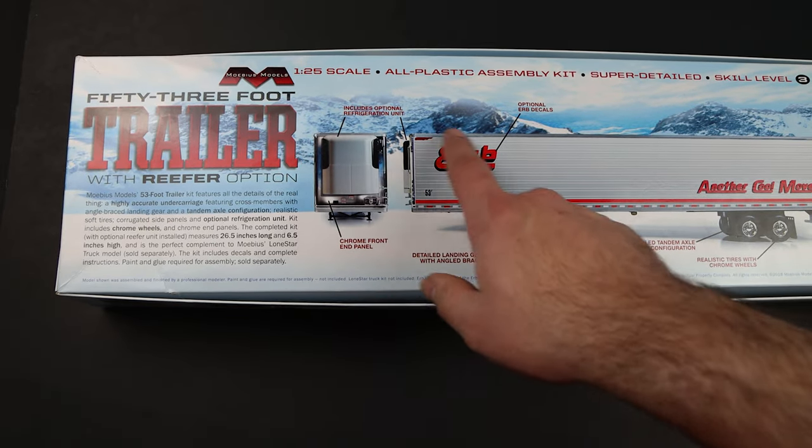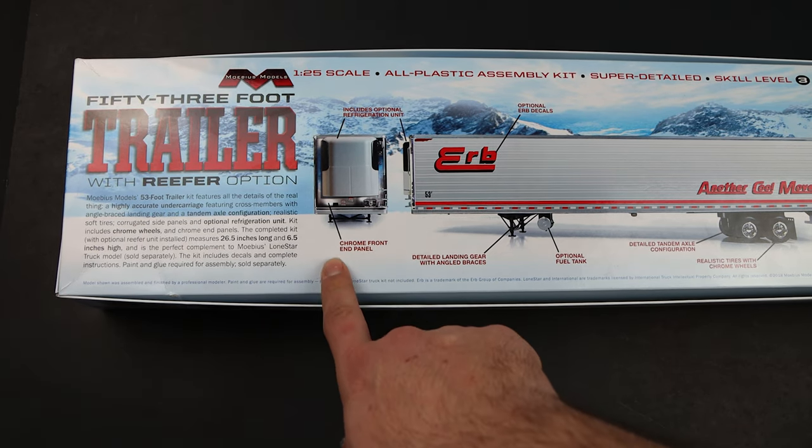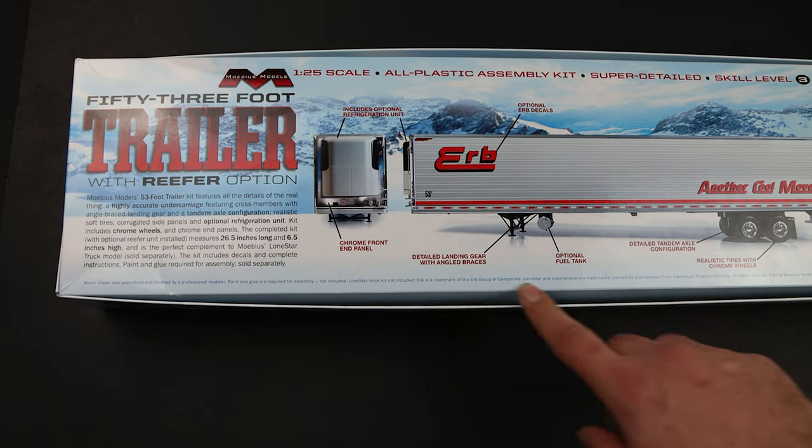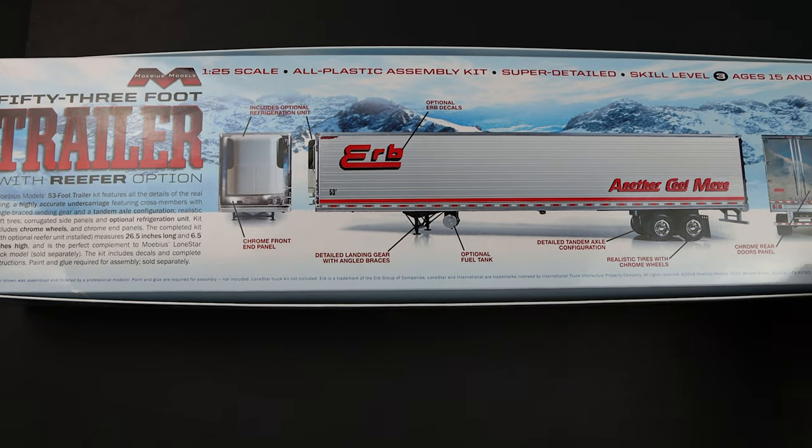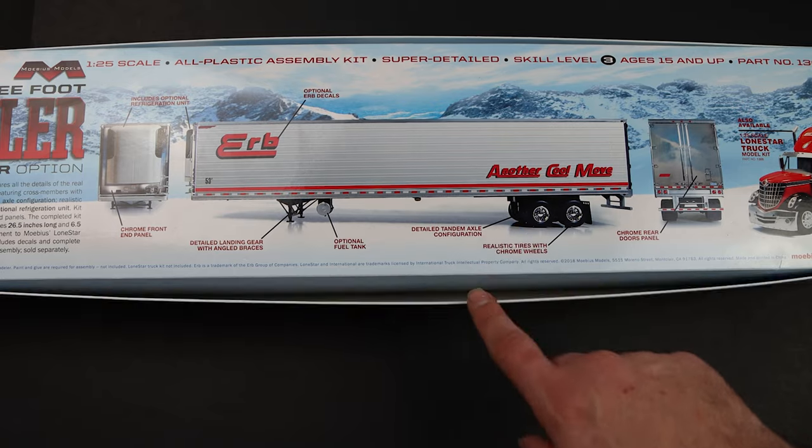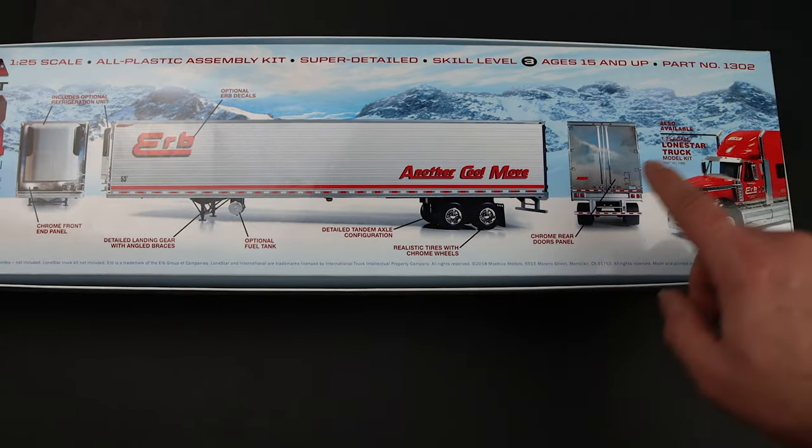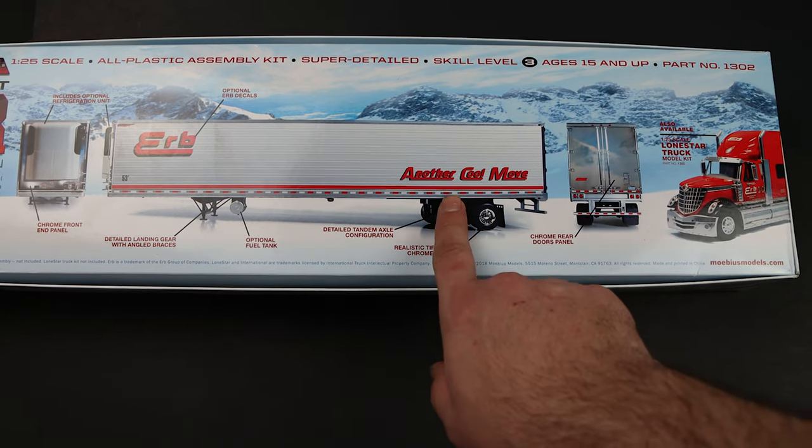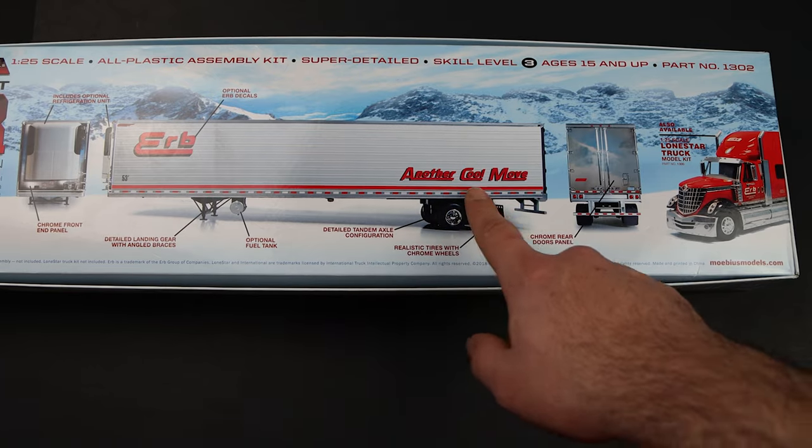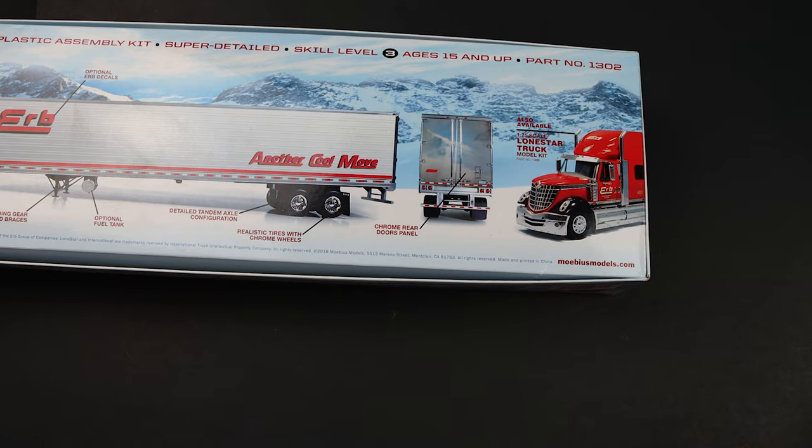You can see here they talk about some of the optional things and whatnot about it. The refrigeration unit on the front, chrome end plates, the landing gear, the optional fuel tank, of course, to go if you're doing it in the reefer. The tandem axles with realistic wheels and chrome wheels themselves. Chrome back end of it. It's got some decals for Herb. Another cool move. And then they show a little bit about the Lone Star.